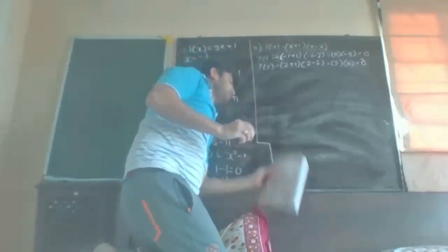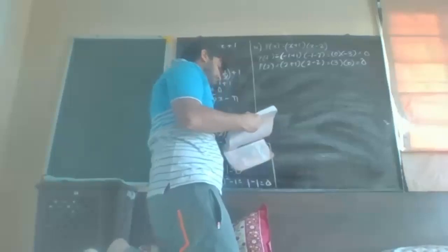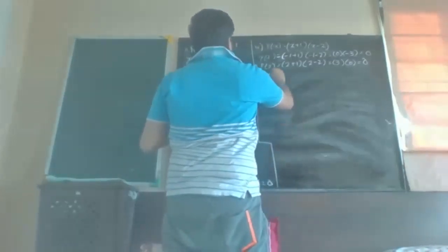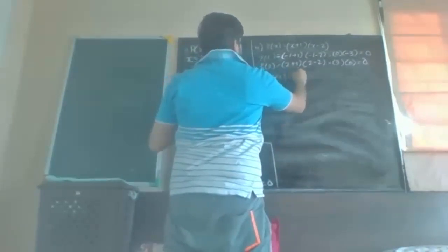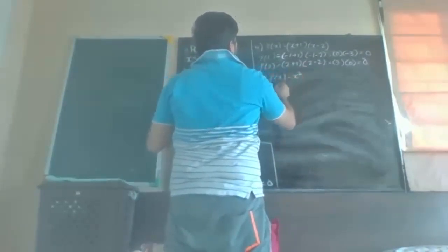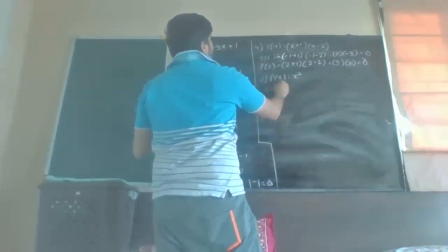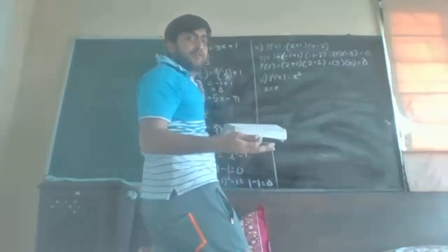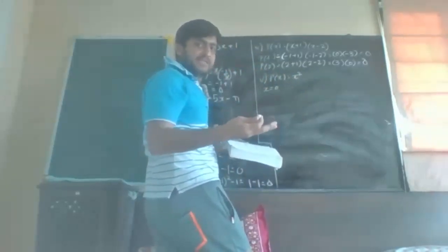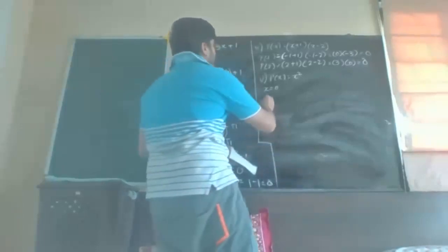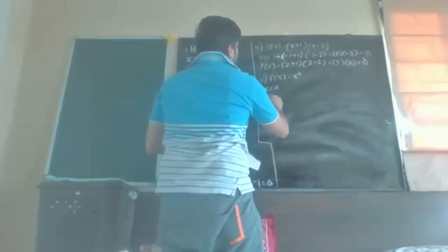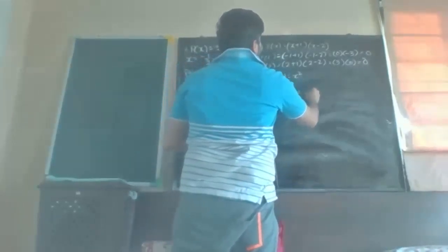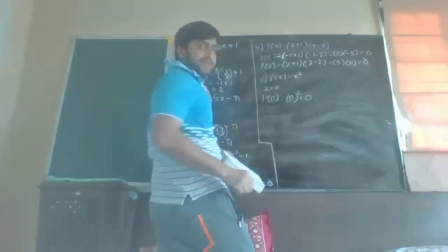Sum number five: p(x) = x² and x is given as 0. So obviously, p(0) = 0 squared = 0. Yes, it is a zero of the polynomial.